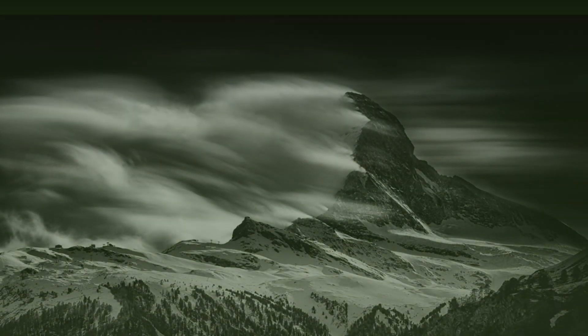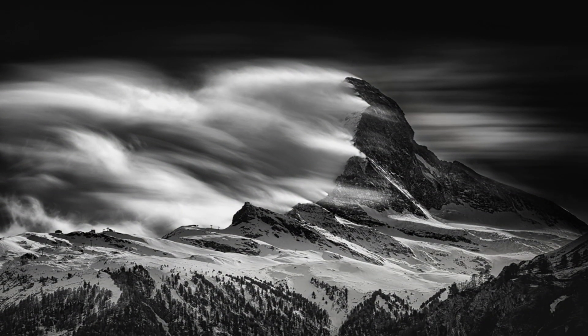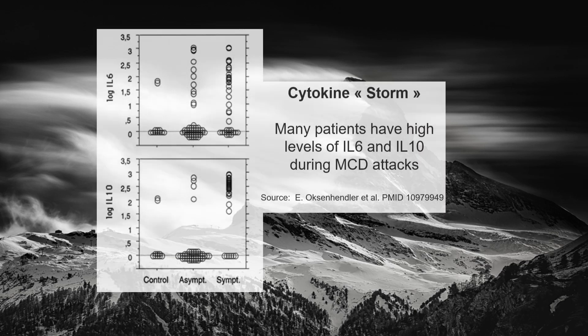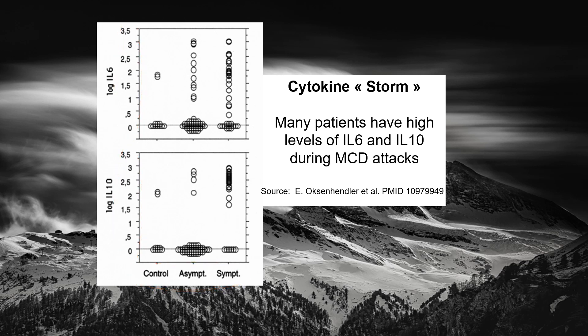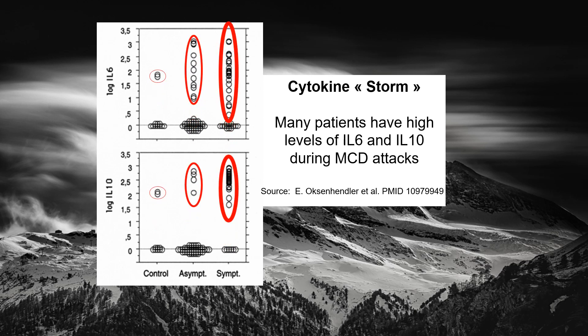A prominent feature of MCD is the so-called cytokine storm: fever, systemic inflammatory response, acute respiratory distress, etc., which in some patients culminate in multi-organ failure and death. In these graphs, the y-axis shows levels of IL-6 and IL-10, and the x-axis distinguishes three groups of patients, all with HIV infection: HHV-8 negative controls, asymptomatic HHV-8/HIV positives, and patients with symptomatic multicentric Castleman's disease. Most patients with symptomatic MCD show very high levels of IL-6 and IL-10.